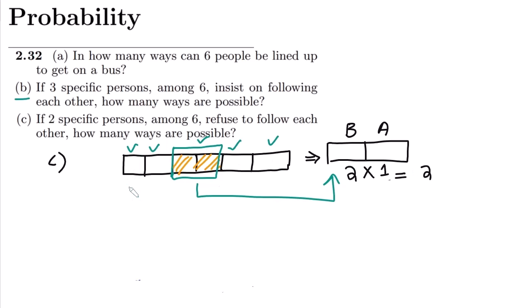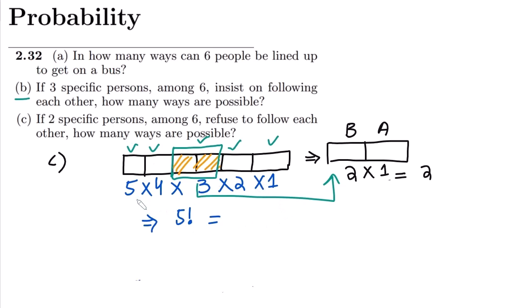With the two persons treated as one unit, we have five total spots. The choices are 5 options, then 4, then 3, then 2, then 1 — that is 5 factorial. 5! = 5 × 4 × 3 × 2 × 1 = 120. So there are 120 arrangements for the five spots when the two persons are grouped together.